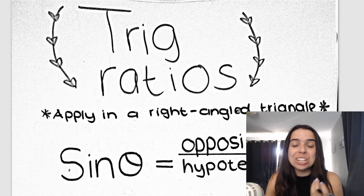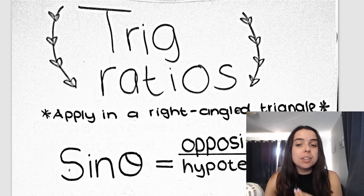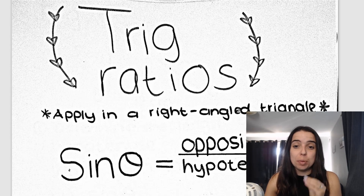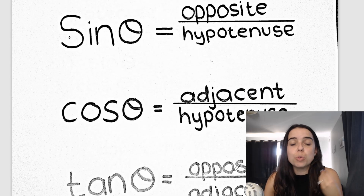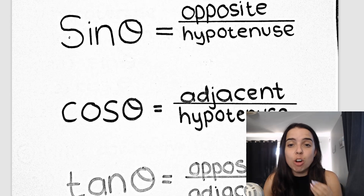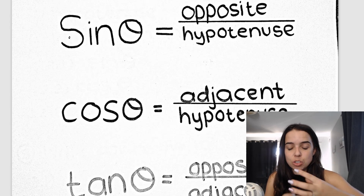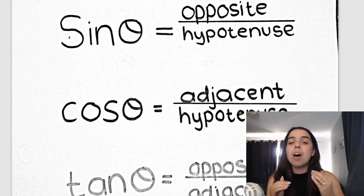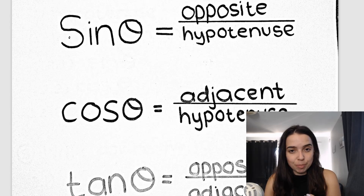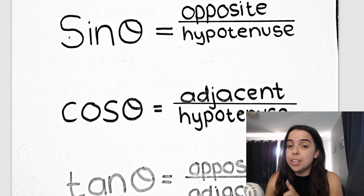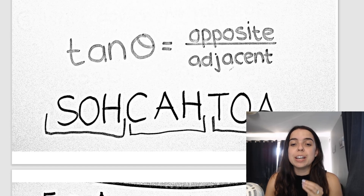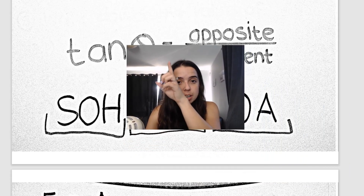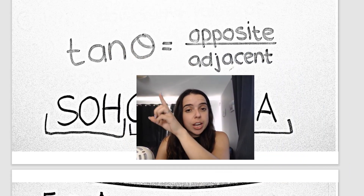Let's have a look at those trig ratios — these are the three basic trig ratios, used only in a right-angled triangle. We have sin or sine: the sin of an angle is equal to the opposite side over the hypotenuse. Then we have cos: cos of an angle is equal to the adjacent side over the hypotenuse. Then we have tan: tan is opposite over adjacent. Remember, opposite means the side opposite that angle, and adjacent means the side adjacent to that angle.